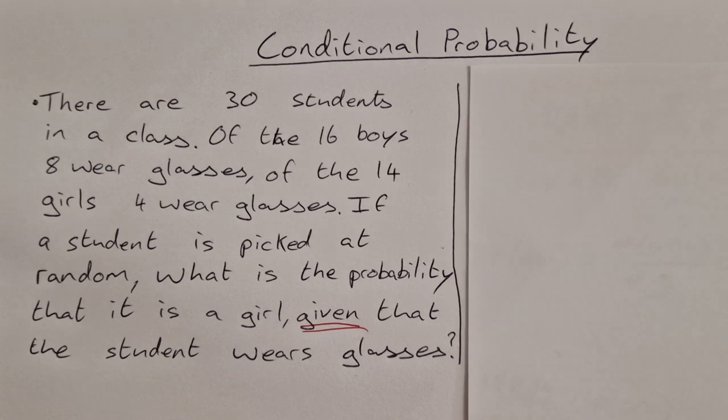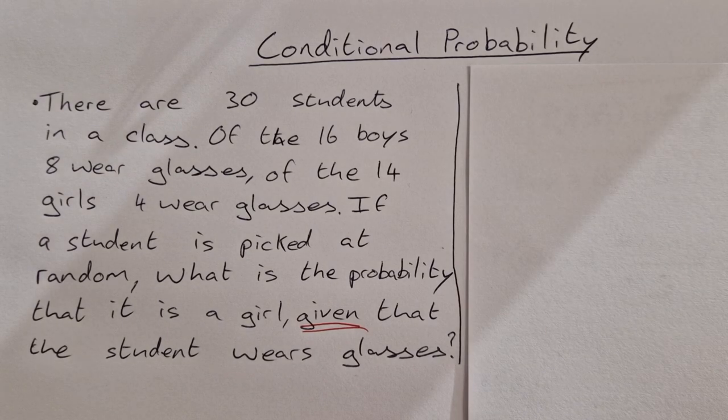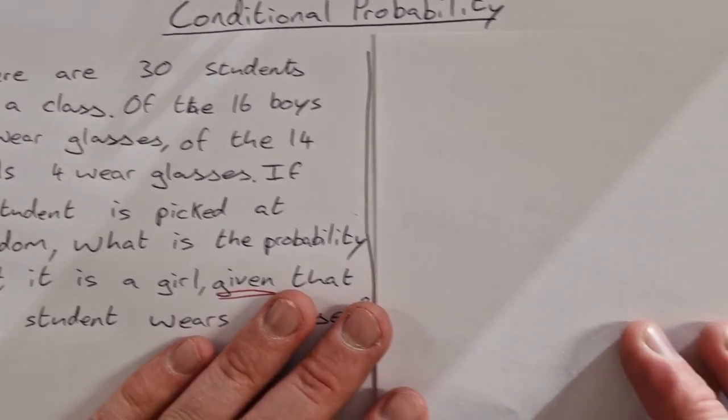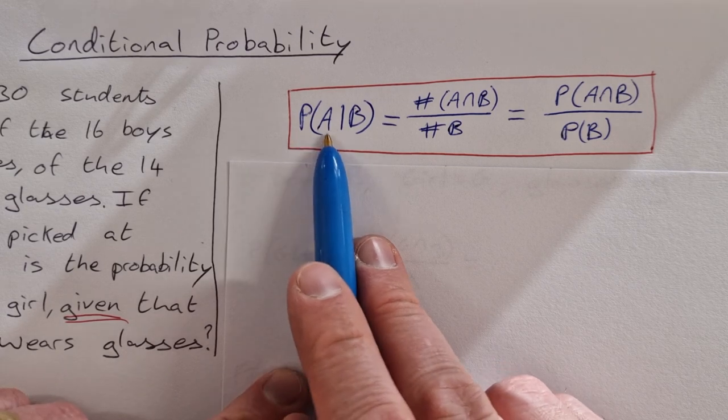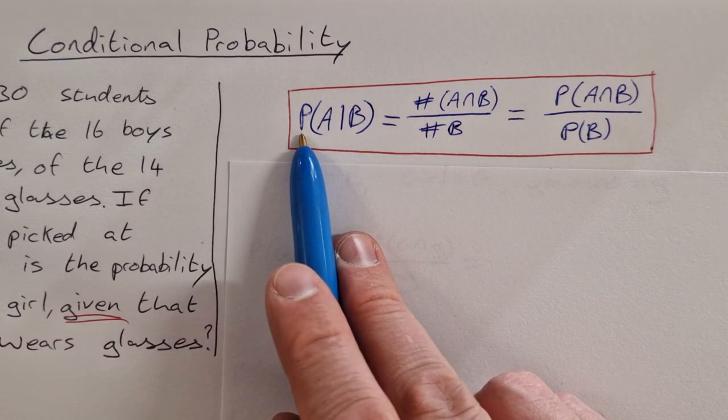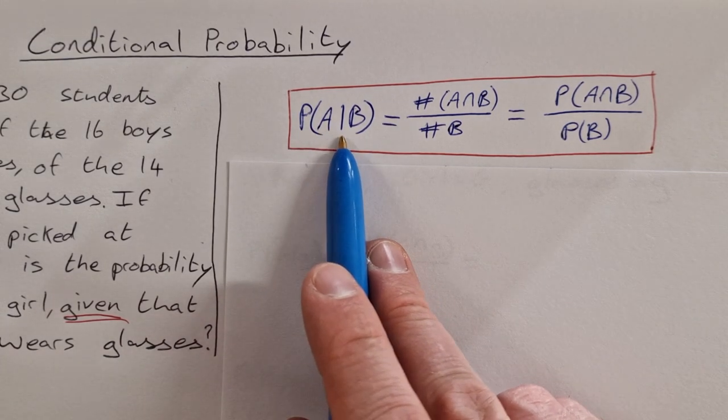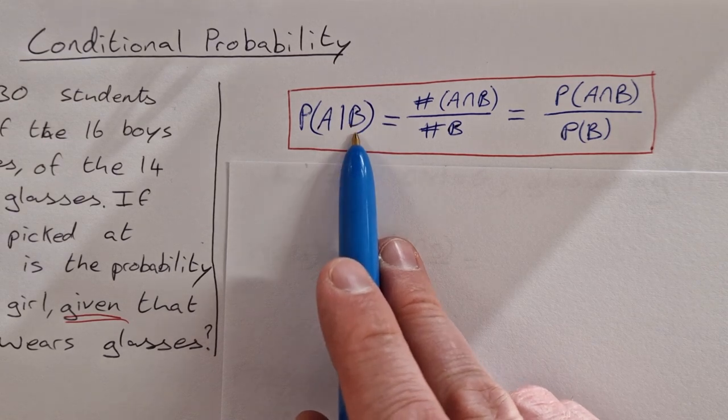So this bit here, given that the student wears glasses, is the bit that makes it conditional probability. So we have a formula for conditional probability. This is the probability of A given B. That's the probability of one thing happening, given that the second thing has definitely happened.